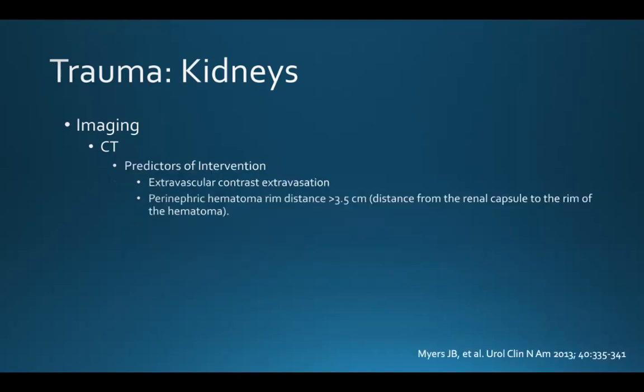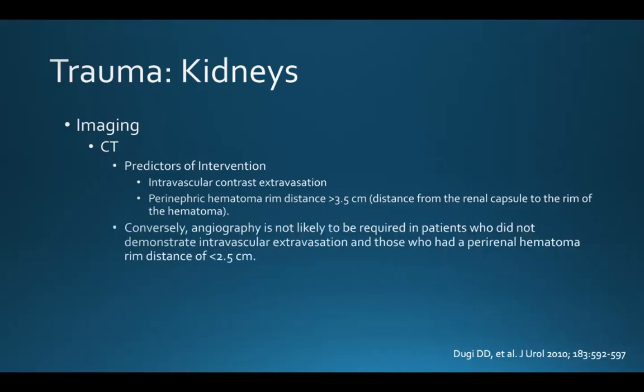On CT, contrast extravasation and a perinephric hematoma rim distance greater than 3.5 centimeters are predictors of intervention. The rim distance is the distance from the renal capsule to the rim of the hematoma. Conversely, angiography is not likely to be required in patients who didn't demonstrate intravascular extravasation and those who had a perirenal hematoma rim distance less than 2.5 centimeters.